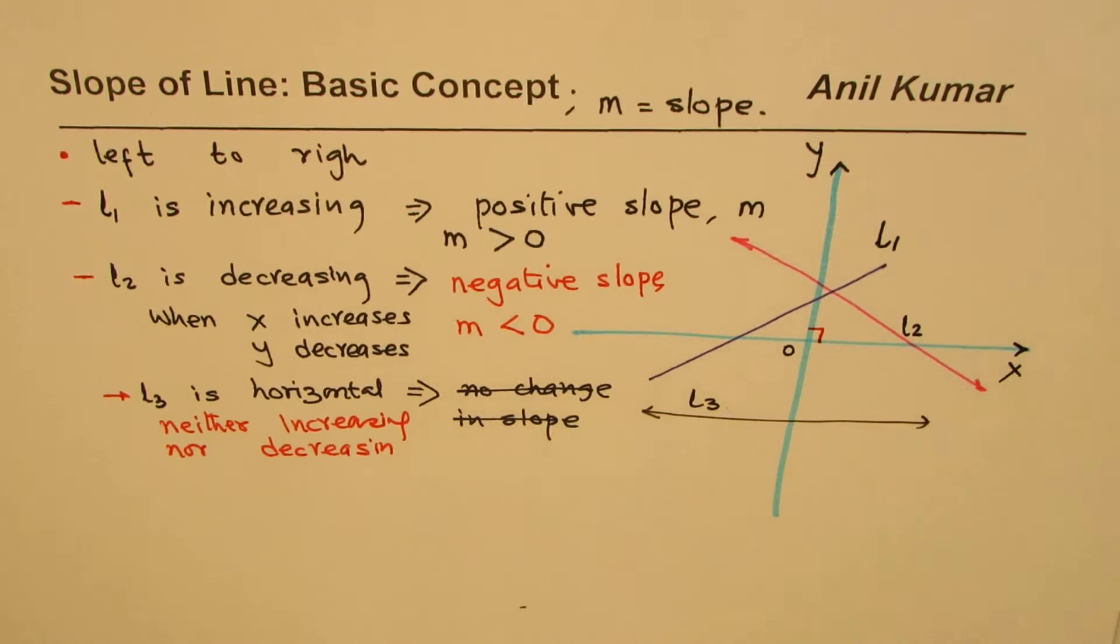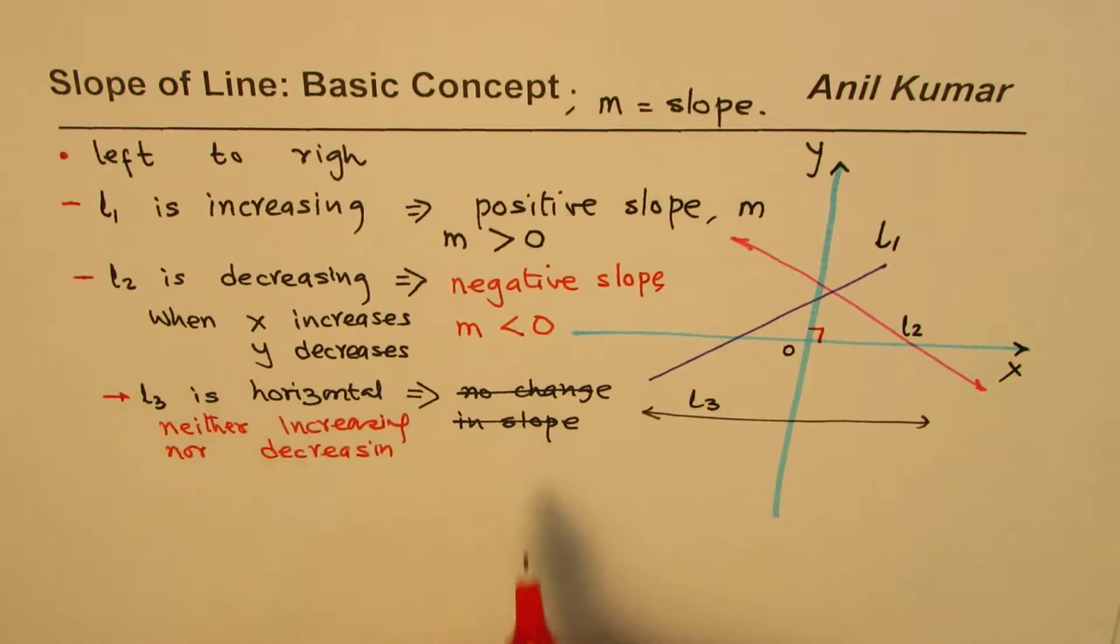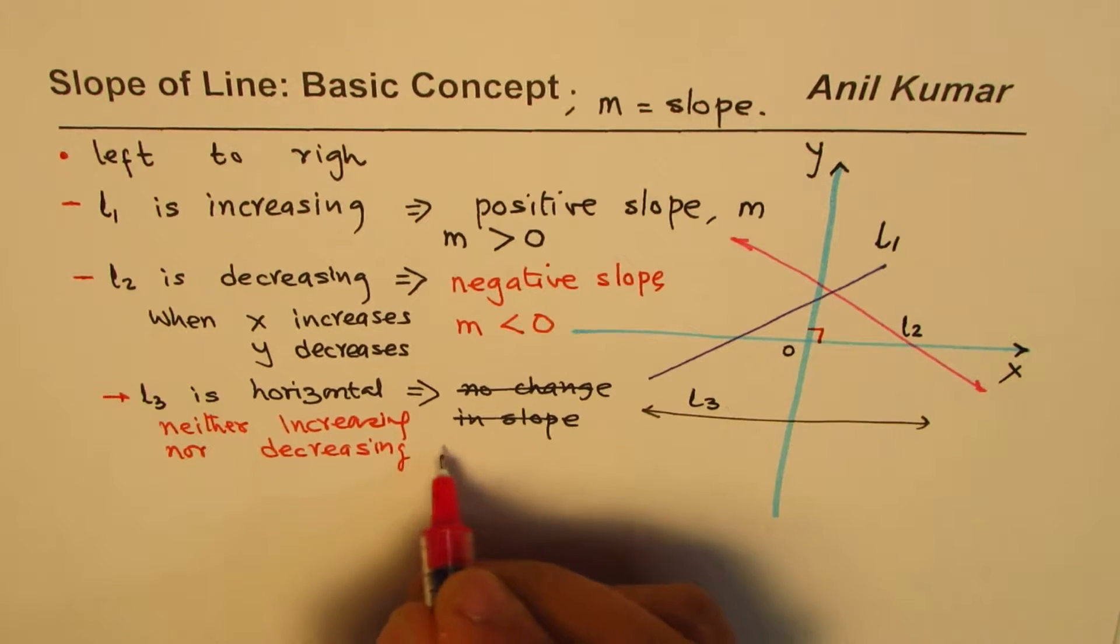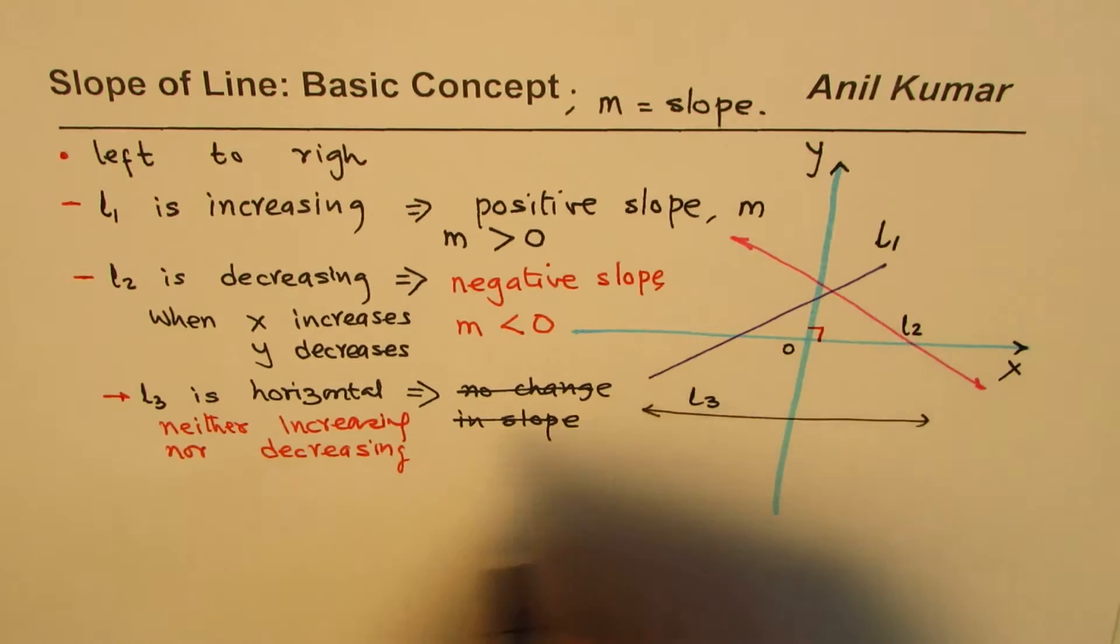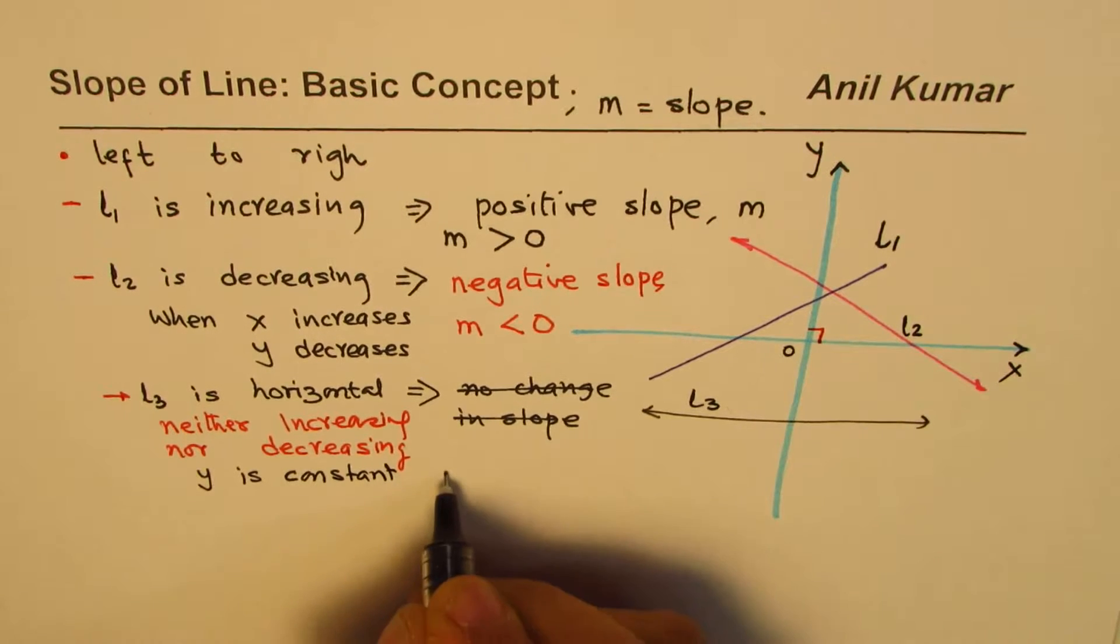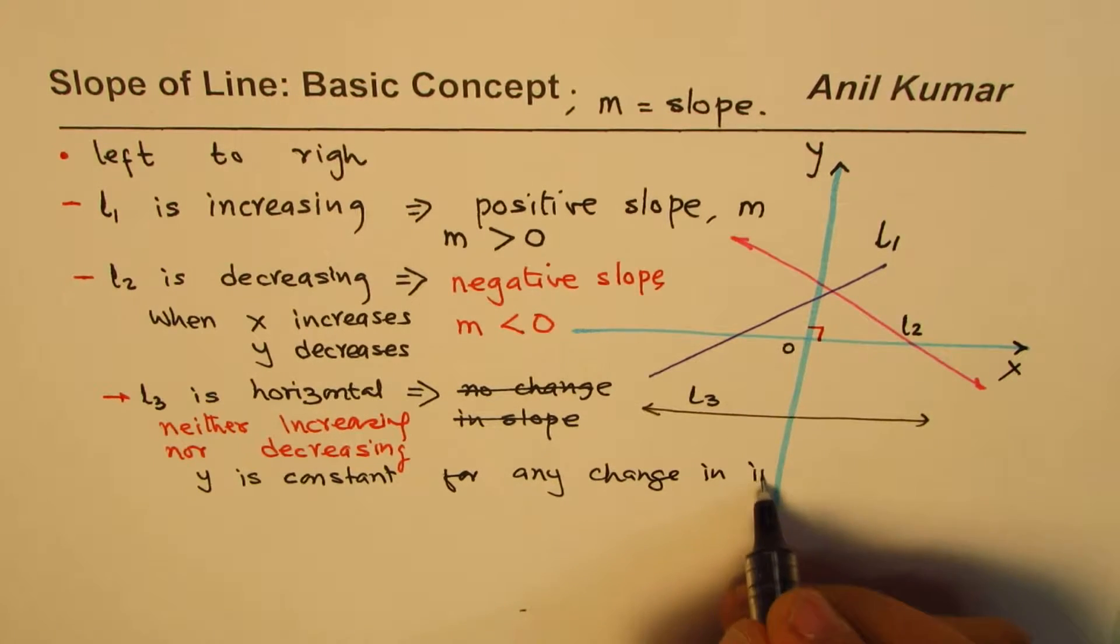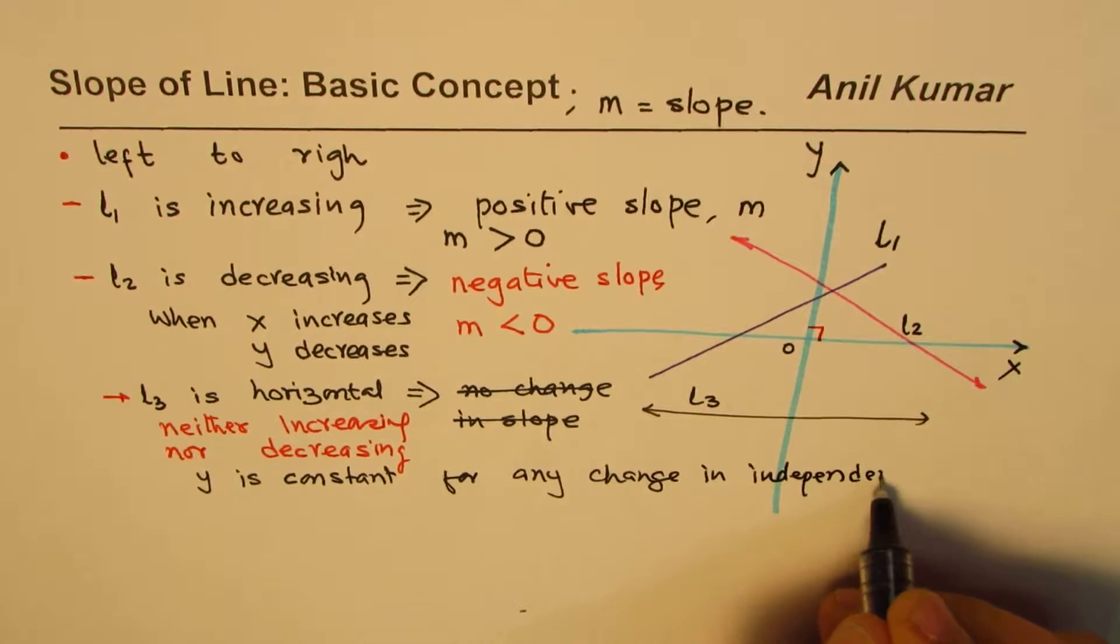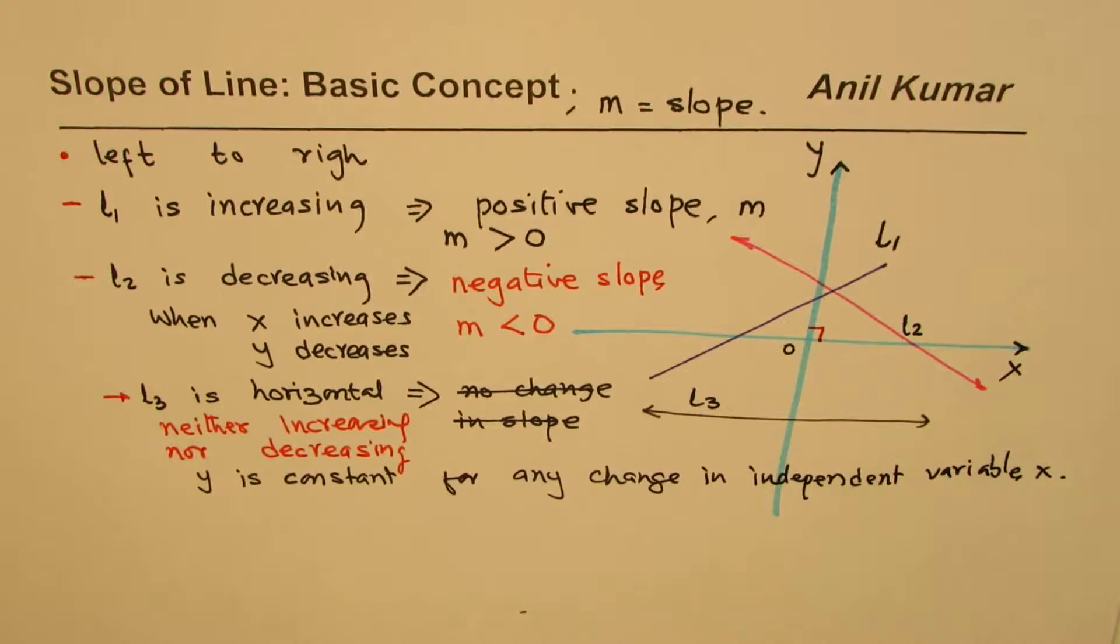What we are trying to say here is that it is neither increasing nor decreasing. This is better. So in such cases, it is horizontal. As you move from left to right, you are neither going up nor down. Y is constant. Here in this case, the dependent variable Y is constant for any change in the independent variable X. This is better terminology. I hope that helps because this is really for the students who are beginning to understand what slope of line is.